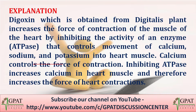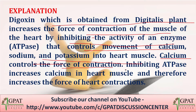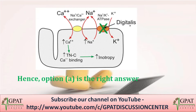Digoxin, which is obtained from the digitalis plant, increases the force of contraction of the heart muscles by inhibiting the activity of the enzyme ATPase that controls the movement of calcium, sodium, and potassium into the heart muscle. Calcium controls the force of contraction, and inhibiting ATPase increases the calcium in heart muscles, leading to an increase in the force of contraction. Here we have a pictorial diagram showing the sodium-potassium ATPase which is inhibited by digitalis or digoxin.